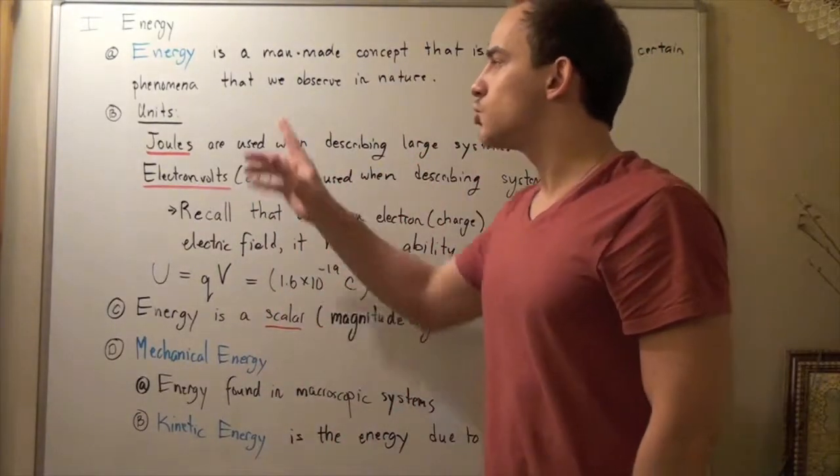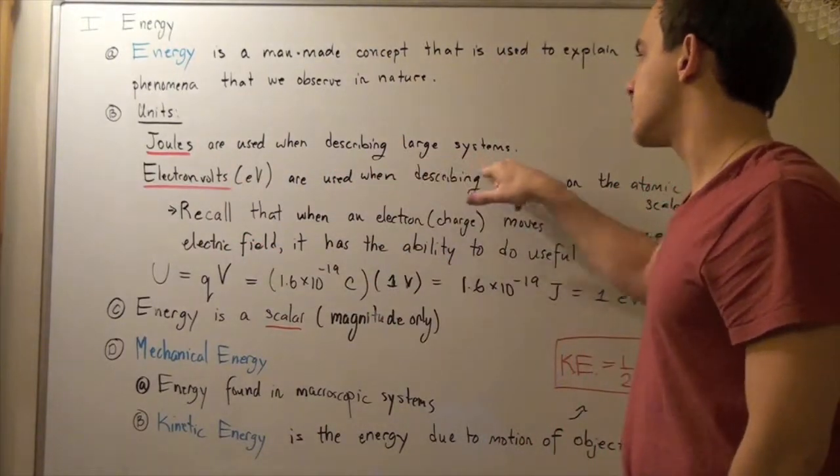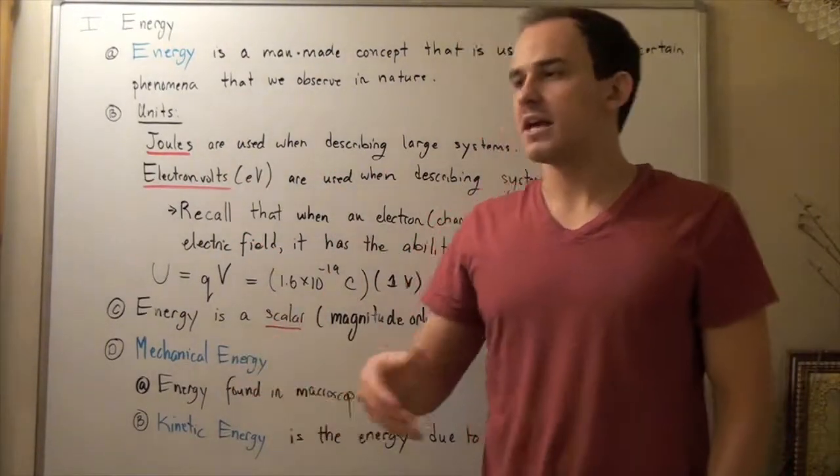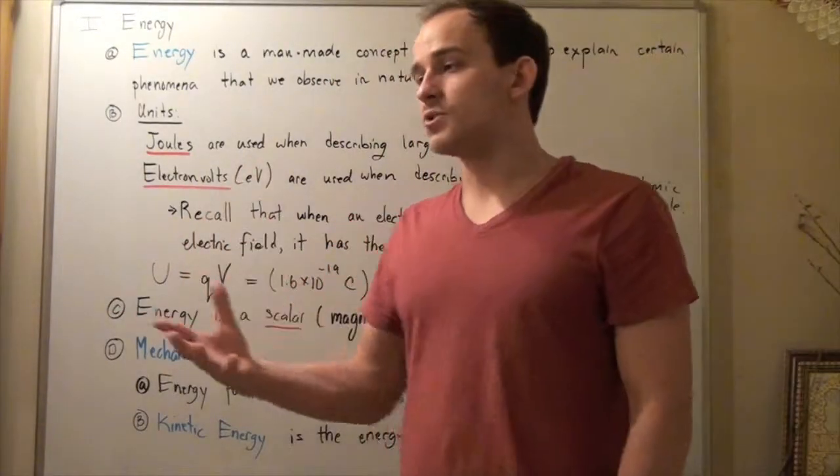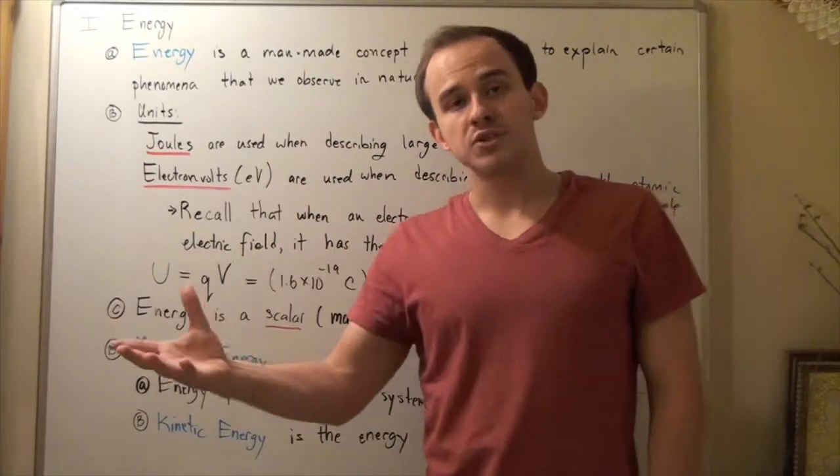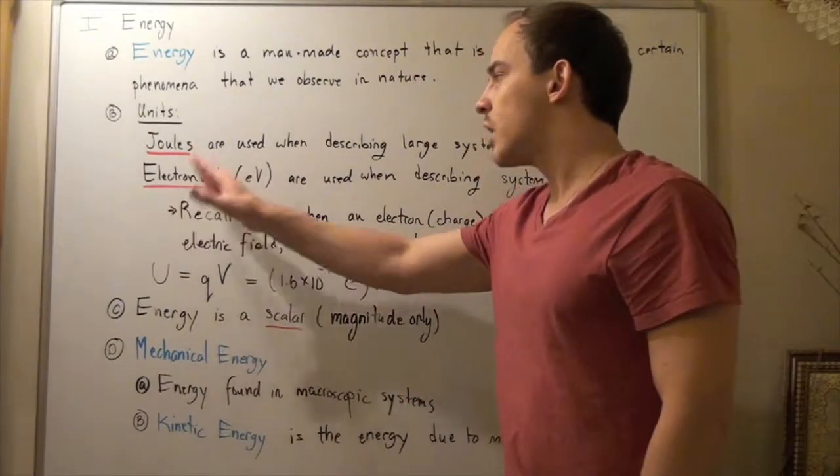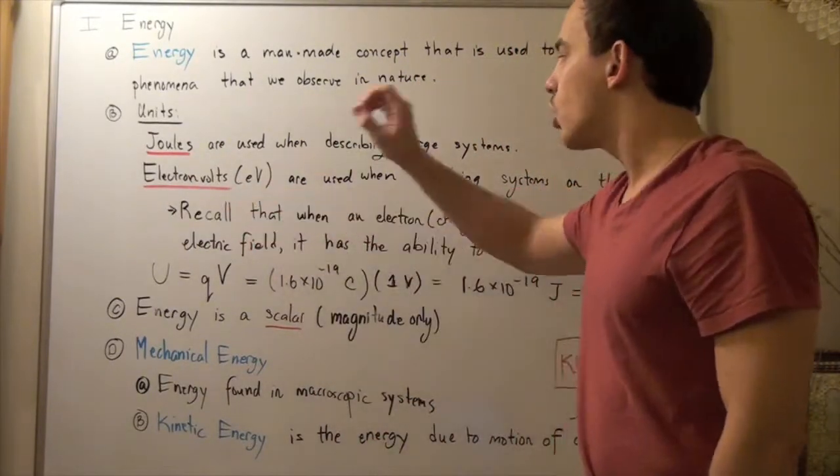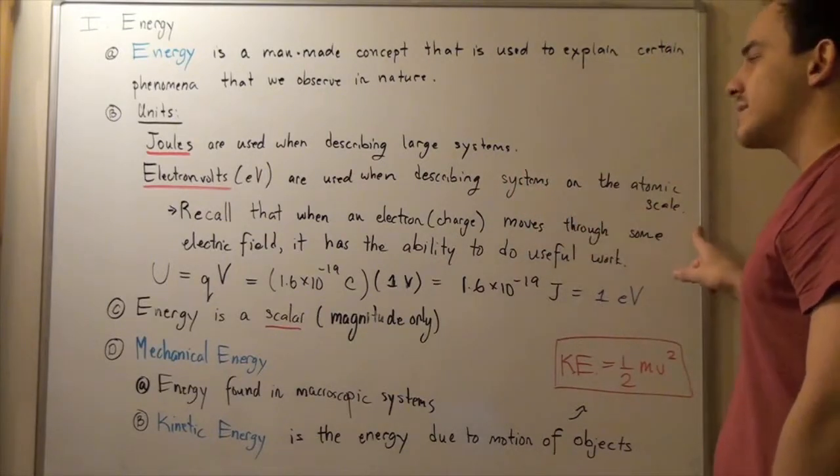Now, energy has the units joules and joules are used to describe large systems, macrosystems. For example, moving cars and moving trains and large moving objects and even stationary objects, because not only moving objects have energy but also stationary objects have energy.